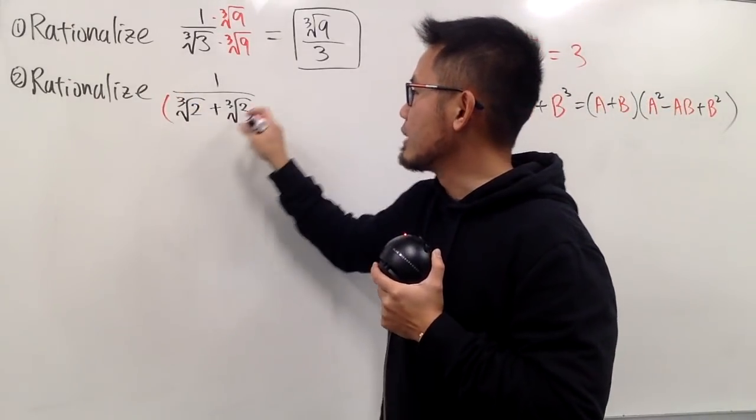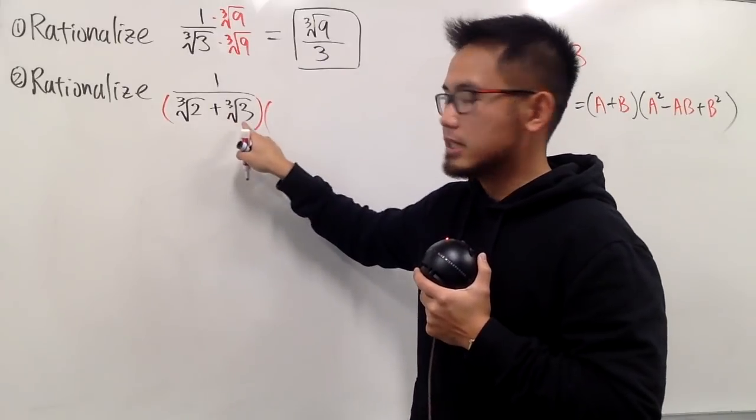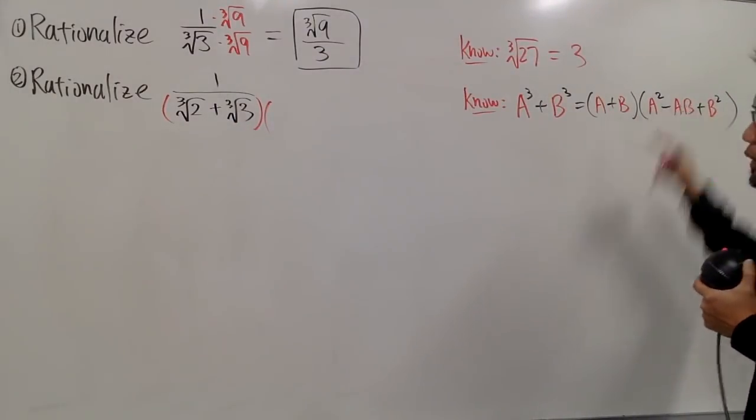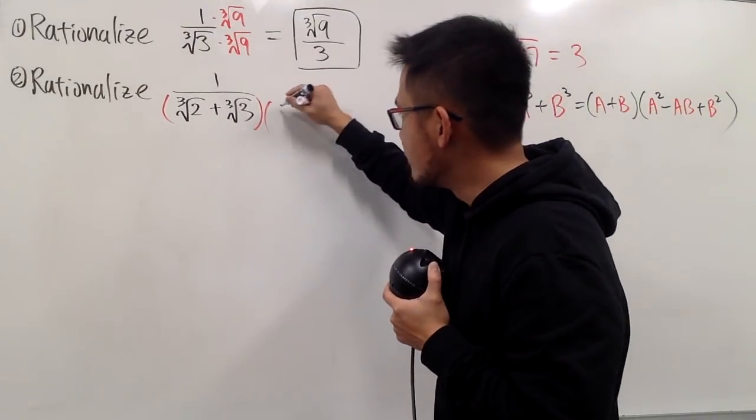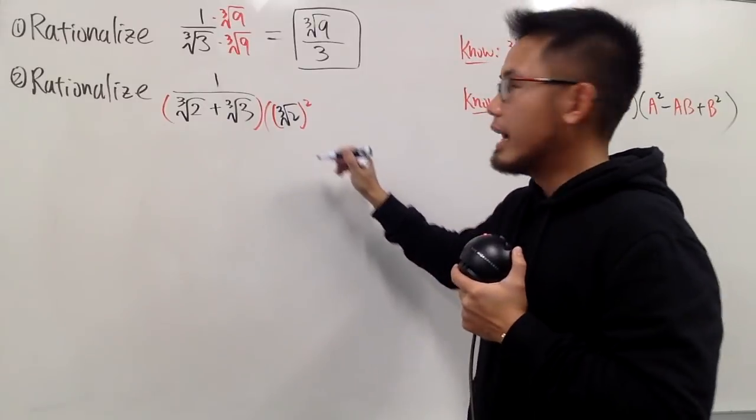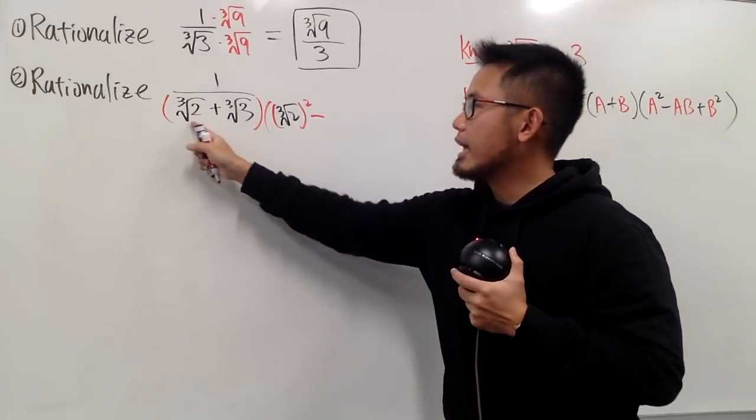So, right here, let me just write this down for you guys. So, this is my a, this is my b, okay? So, what we have to do is, I will have to do a squared. So, it seems like we will have the cube root of 2, and then square that. And then we minus a times b, right?